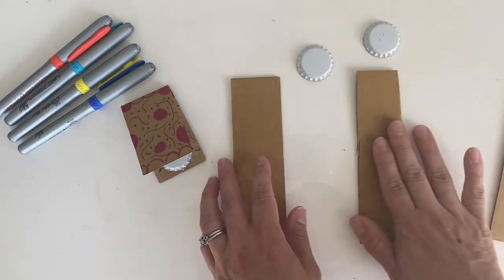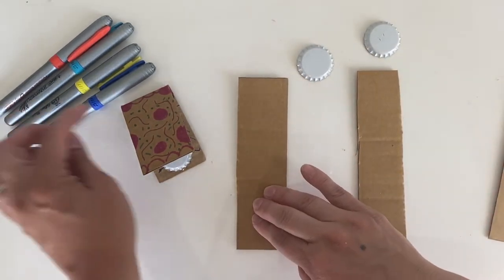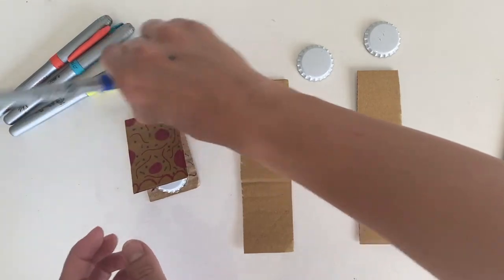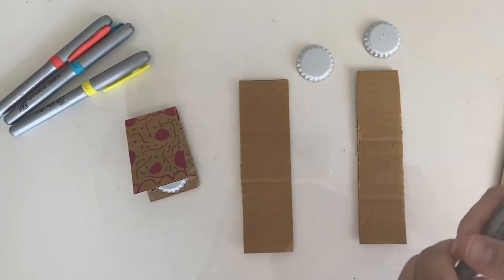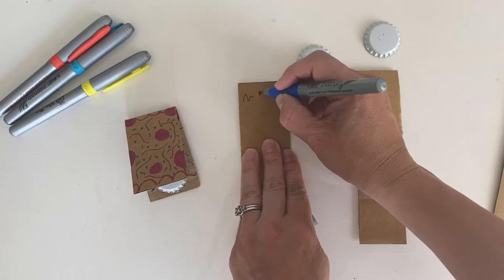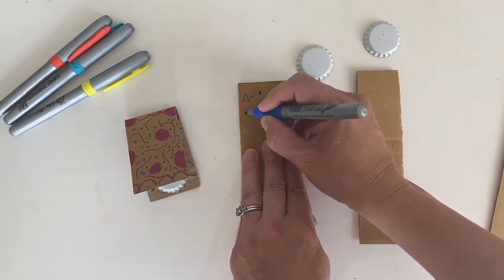Once you have done that, you have a strip to decorate. So go ahead, make your designs. Take your markers, think of any designs that you would like, and decorate your instrument.